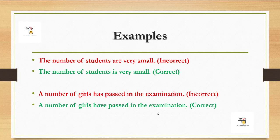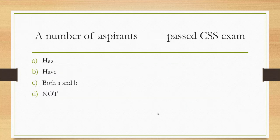تو یہ تھا آج کا rule 'a number of' اور 'the number of' کے بارے میں۔ مجھے امید ہے آپ کو آج کا یہ rule سمجھ آیا ہوگا۔ اسی طریقے سے ہم نے ایک MCQ آپ کے لیے رکھا ہوا ہے جس کا answer آپ نے comment section میں دینا ہے۔ 'A number of aspirants ___ passed CSS exam' - Has ہوگا، Have ہوگا، Both A and B ہوگا، یا NOT ہوگا؟